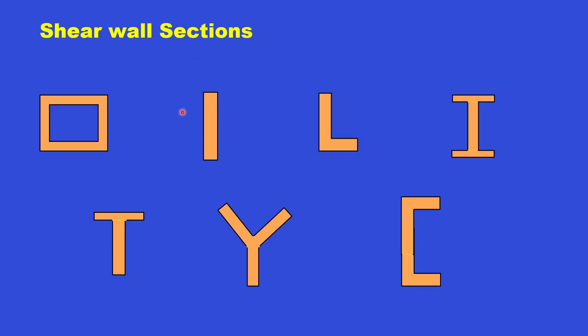Shear walls can be provided with different cross-sections. Schematic sections shown include box, I-section, L-section, I-section with flange, T-section, Y-section, and channel section. These are all shear wall plans of different categories. Based on the structural requirement, you can select any kind of configuration.